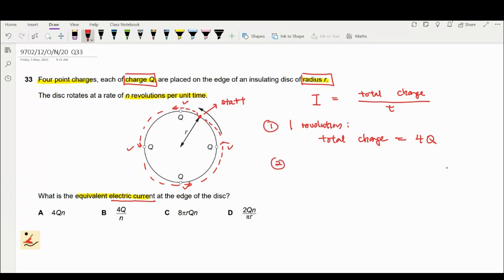Secondly, we look at the given information here: n revolutions per unit time. They give you revolutions per unit time.